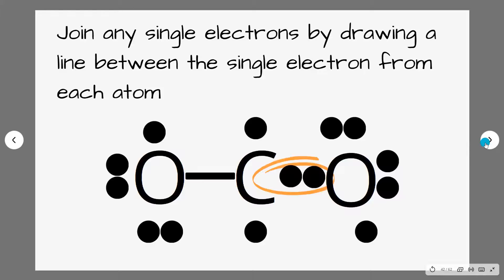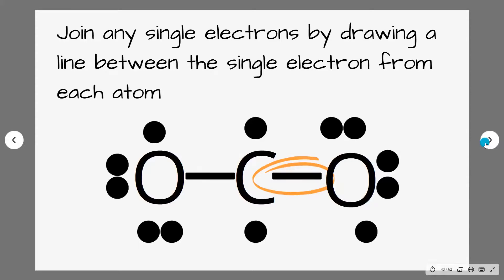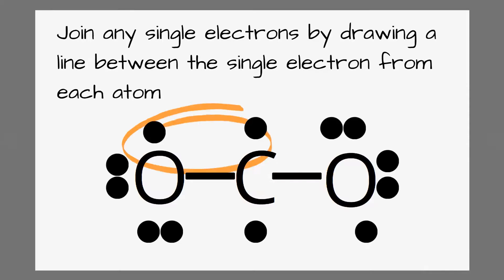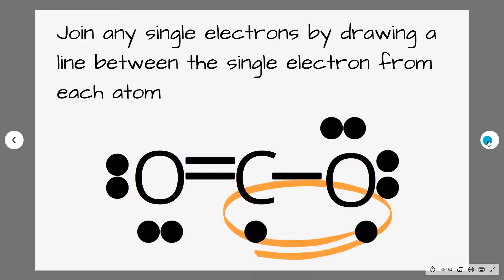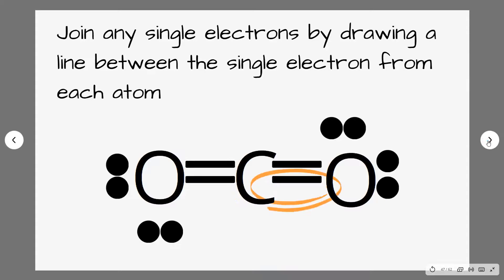Again, another two single electrons and we're going to change those into a covalent bond because the electrons want to be paired up. We have another two up here, so we replace those with a double bond, and the same for the ones down the bottom. So now all of our electrons are in pairs.